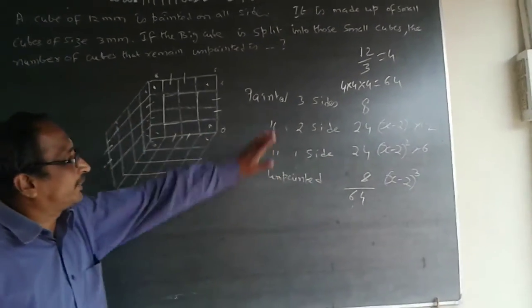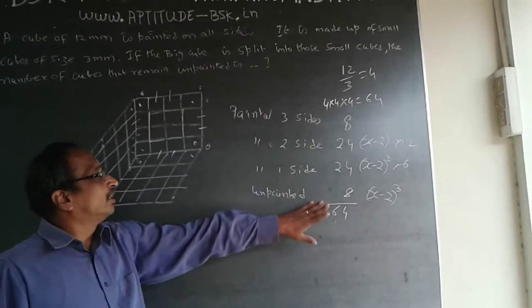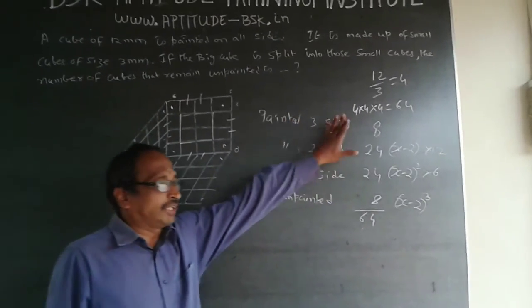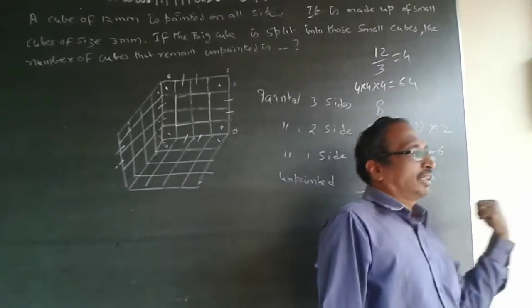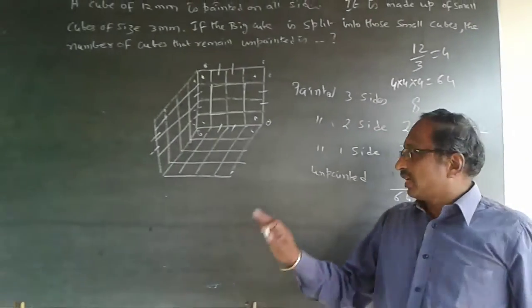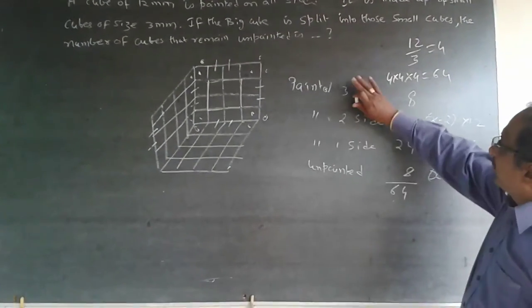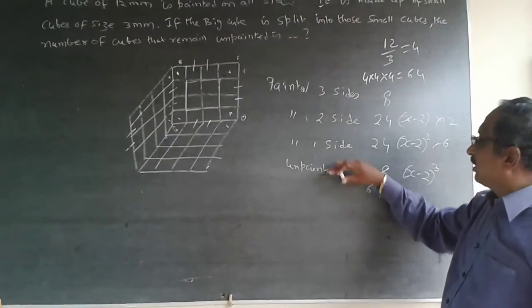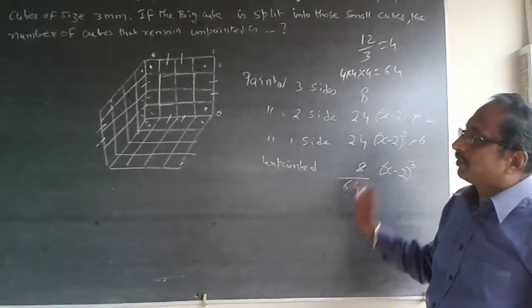Normally in exams they will be asking all of these — painted three sides, two sides, one side, and unpainted. As far as this question is concerned, the answer is only 8. We are not being asked about 3 sides, 2 sides, or 1 side here. So the answer is 8.